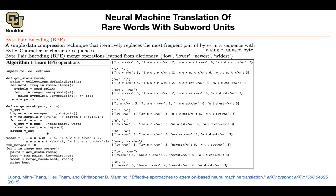Let's see what the algorithm is actually doing with this example. This is your dictionary, and the number of times the word 'low' appeared is five times. The word 'lower' appeared two times in your corpus. 'Newest' appeared six times, and 'widest' three times.